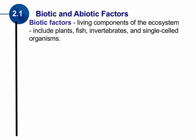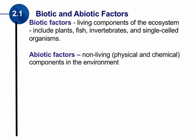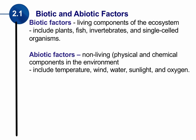If something was never alive or isn't living, then it's considered an abiotic factor. Abiotic factors are the non-living components — both the physical and chemical components of an environment — such as temperature, wind, water, sunlight, and oxygen. All of these things together are important non-living abiotic factors in an ecosystem.